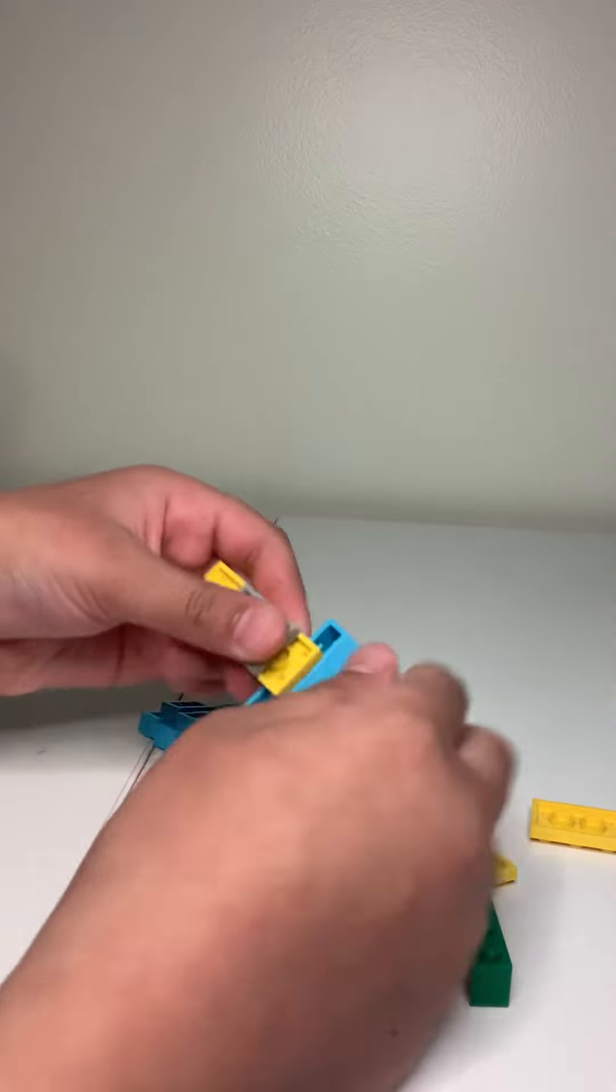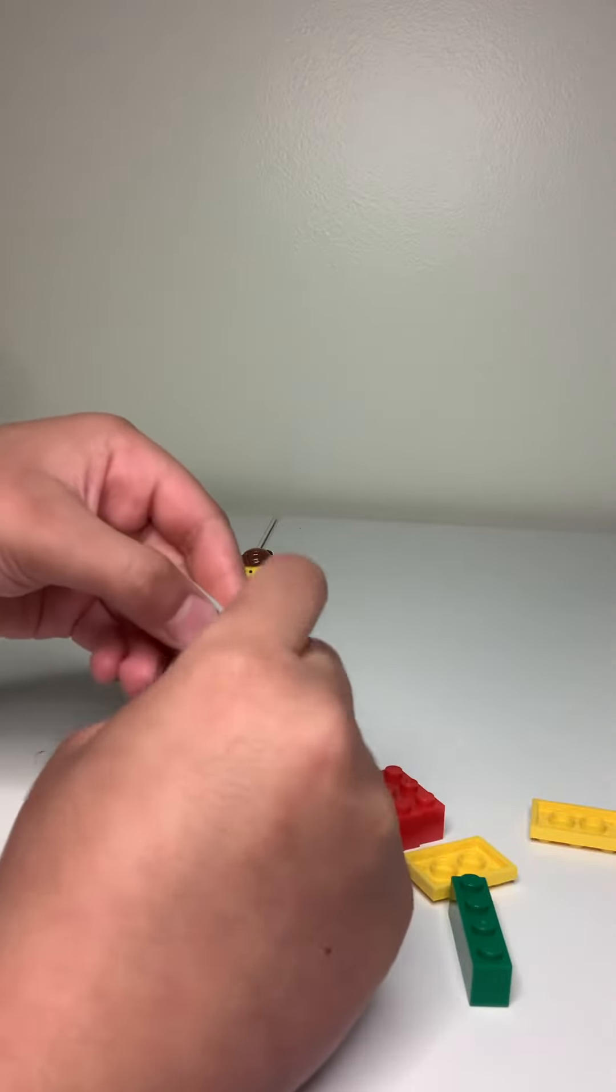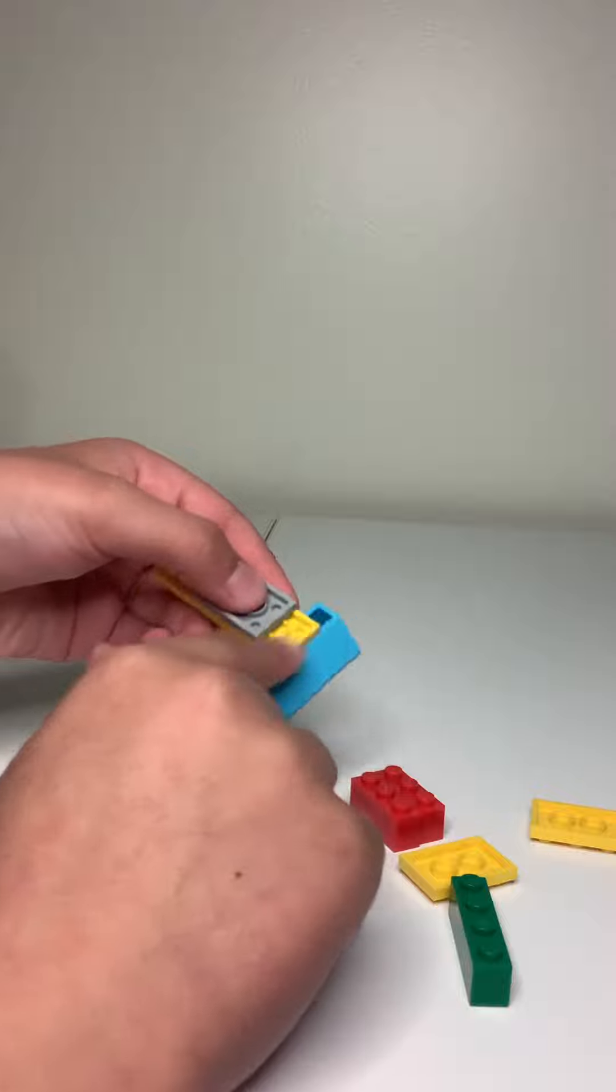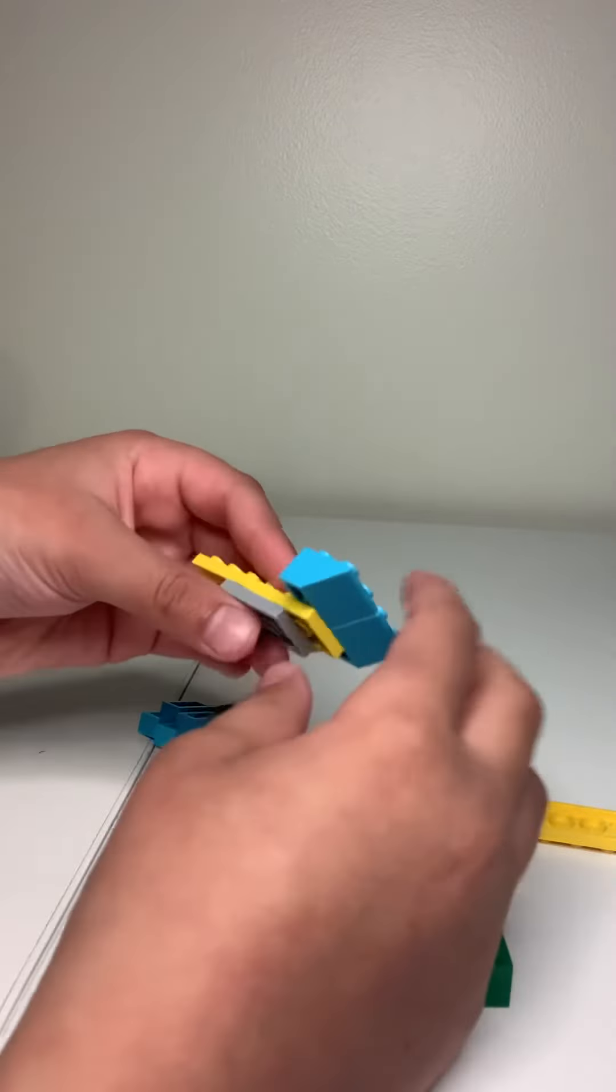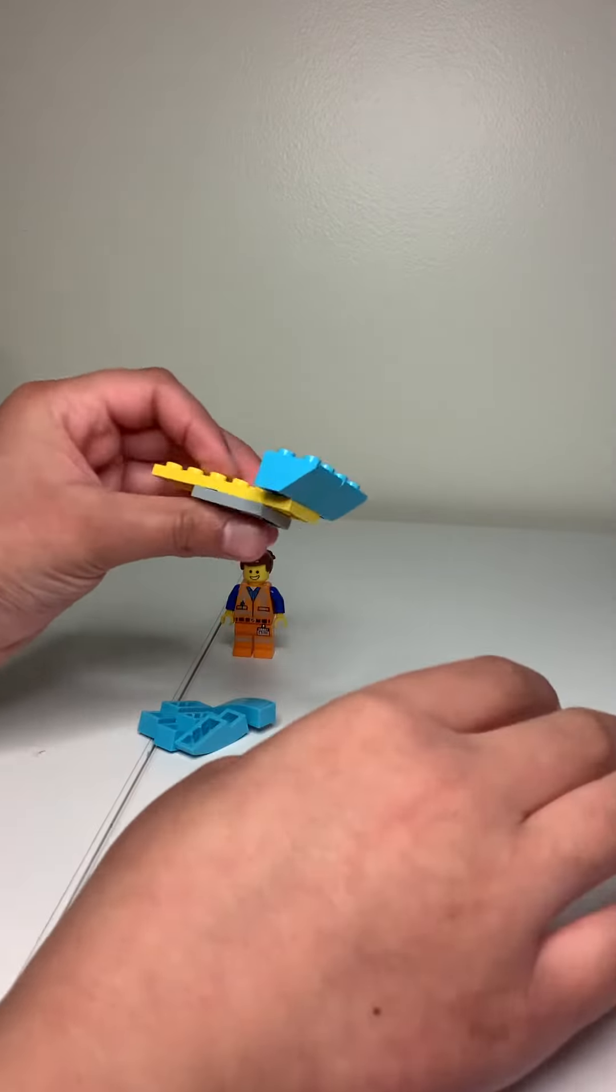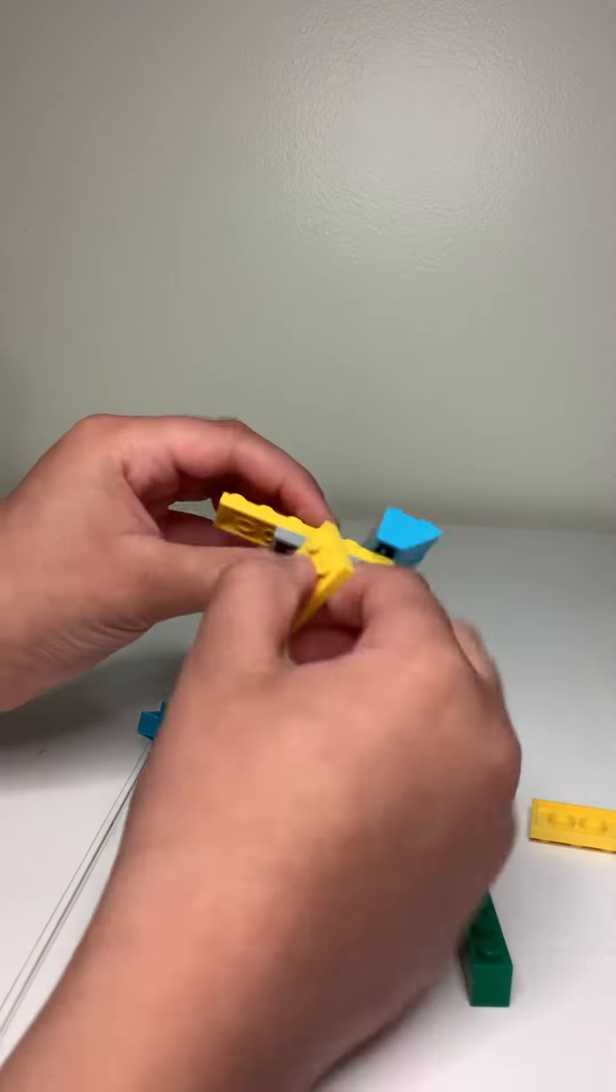then right at the corner. If these keep falling off, you can put 2 1x1s, and that one flat piece on it, and then it will hold it. But if that doesn't happen, you don't have to do it.